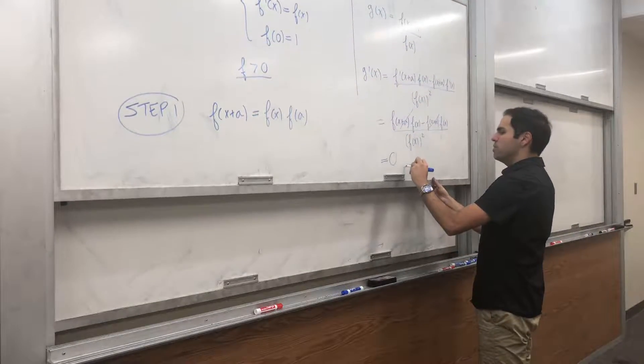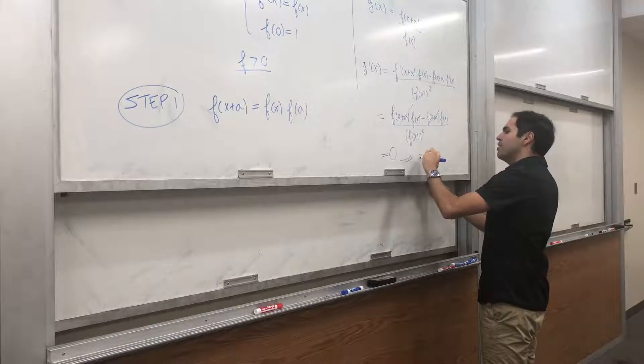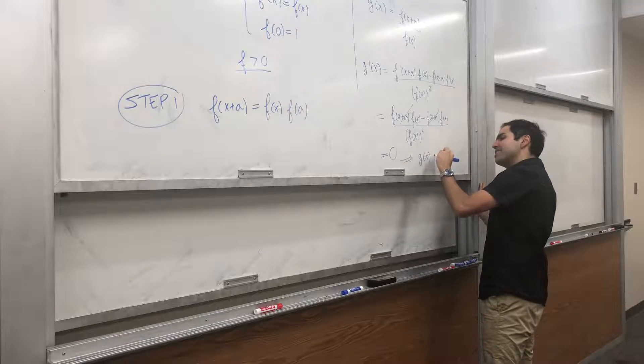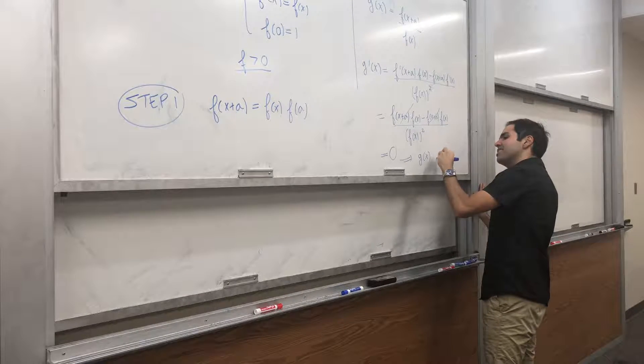And therefore, maybe Rolle's theorem or something, or maybe it's called Fermat's theorem. So g of x is a constant.